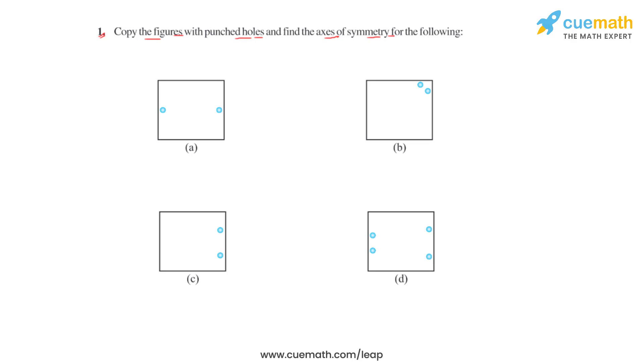In the first question of this first exercise, we have been given a few figures with punched holes and we need to find the axis of symmetry for them. By definition, the axis of symmetry, also known as the line of symmetry, is a line about which a figure is divided into two equal halves, and when the figure is folded about that line, the two equal halves will coincide.